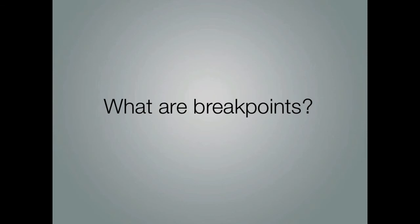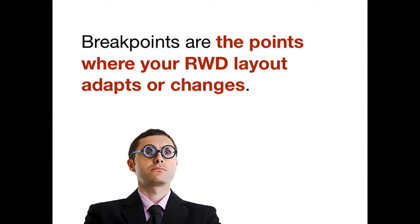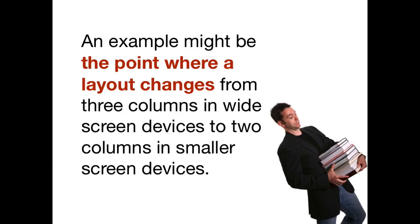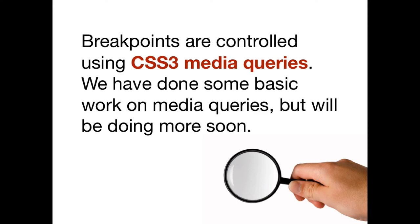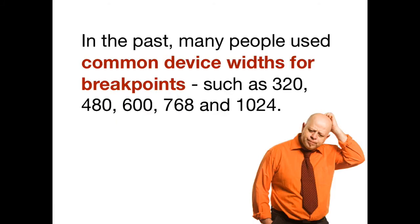What are breakpoints? Breakpoints are that point in the layout where the layout changes or adapts. A quick example would be where you have a three-column layout on widescreen, and then as you pull the browser window in, the layout jumps and changes to a two-column layout — that point where it changes is the breakpoint. Breakpoints are controlled using CSS3 media queries. In the past, many people used common breakpoints such as 320, 480, 600, 768, etc., all based on devices.